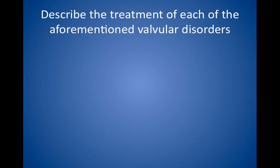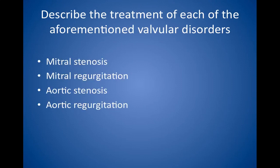Describe the treatment of each of the aforementioned valvular disorders. Mitral stenosis is a mechanical problem and requires balloon valvotomy or surgery if it becomes severe. Medical management with diuretics, digoxin, and beta blockers is only adjunctive to either percutaneous or surgical intervention. Mitral regurgitation is treated with corrective surgery if certain indications are present, such as a flail leaflet or severe regurgitation. Vasodilators such as nitroprusside and hydralazine may be used in symptomatic patients. Atrial fibrillation is treated with rate control and anticoagulation as appropriate.